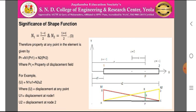Therefore, any property at a point in the element is given by: P = N1·P1 + N2·P2, where P1 and P2 are properties at the respective nodes and N1 and N2 are the shape functions. For example, the displacement at any point in the element is: u = N1·u1 + N2·u2, where u1 and u2 are displacements at node 1 and node 2 respectively.